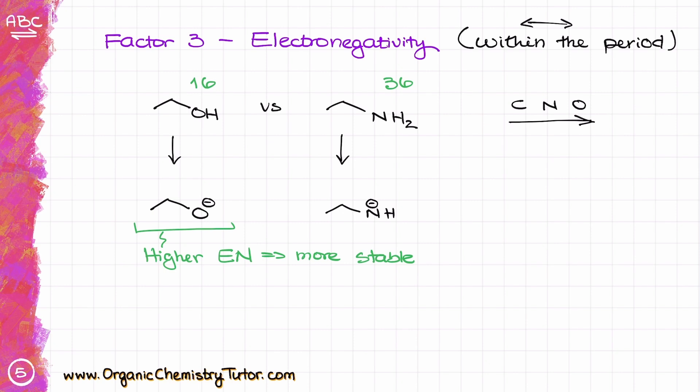An important point: size will always trump electronegativity. Size is more important. For example, sulfur has significantly lower electronegativity than oxygen — sulfur's is just above 2.5 while oxygen's is nearly 3.5 — yet sulfur, being a larger atom, can stabilize the negative charge better than oxygen despite oxygen's higher electronegativity.